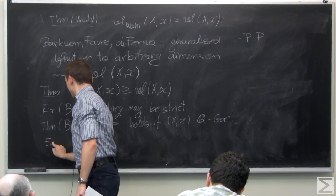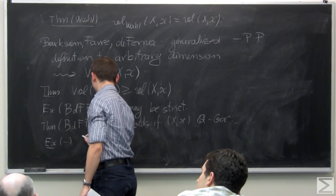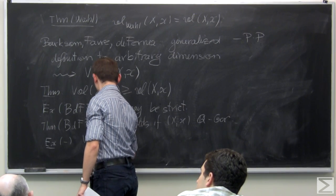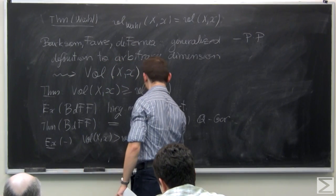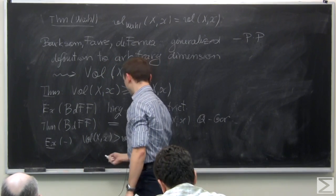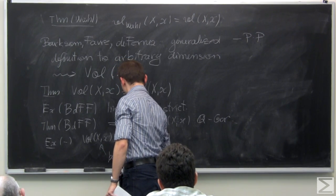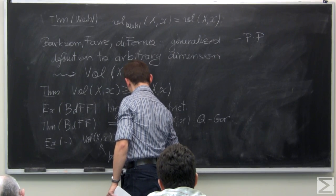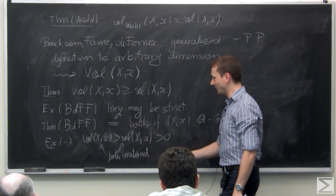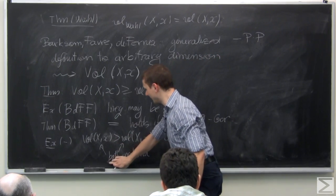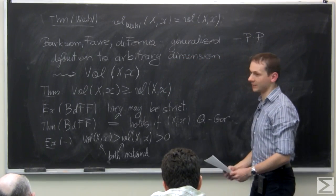I showed that Capital-Vol(X, x) ≥ vol(X, x) — so the capital-V notation is deserved, their volume is better. The vanishing of their volume says more than the vanishing of mine. They construct examples where the inequality may be strict. However, they show equality holds when (X, x) is Q-Gorenstein. Because their definition must take into account all resolutions of x, it's pretty hard to compute outside this case. Using vol_x for different divisors, I was able to compute that both volumes can simultaneously be strictly greater than zero and both irrational.